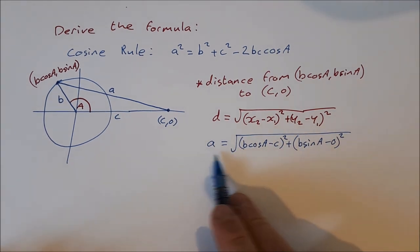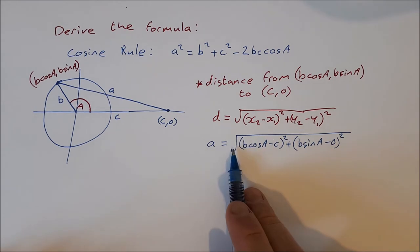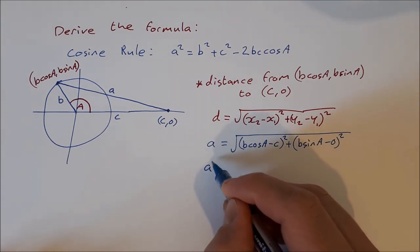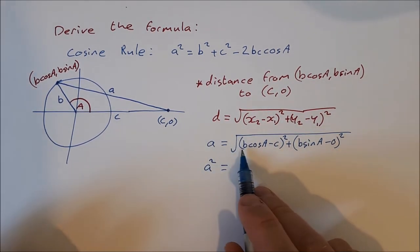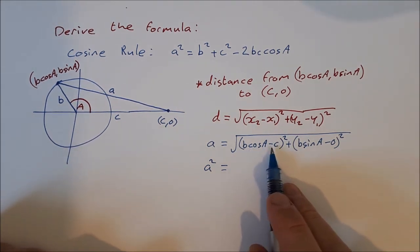Okay, so a few things that I can do here. I can square both sides to get rid of the square root sign, so that'll be a squared. Then the square root sign is gone. Now here, b cos A minus c, I can square that.